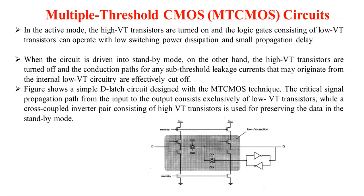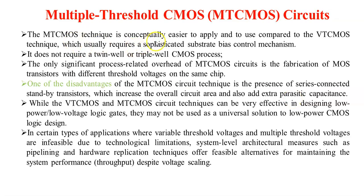The MTCMOS circuit is conceptually easier compared to the VTCMOS circuit. In VTCMOS, using the substrate bias control increases the overall chip area compared to MTCMOS. Also, MTCMOS does not require twin-well or triple-well CMOS process. The only significant process requirement for MTCMOS is the fabrication of transistors with different threshold voltages on the same chip.